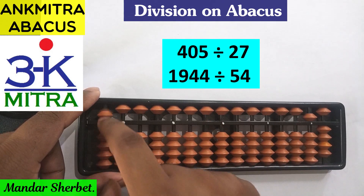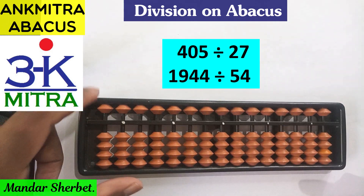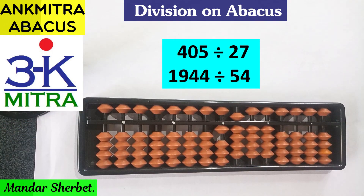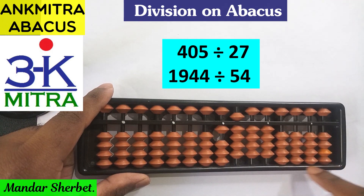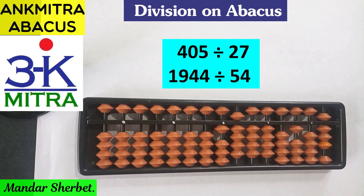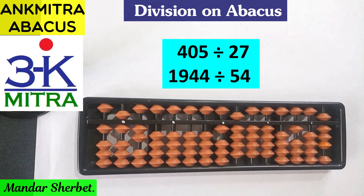Now let's consider the second sum. The dividend — the number to be divided — is a four-digit number: 1944. I'll place 1944 on the question set. The divisor is 54. Assuming we don't know the table of 54 by heart, we'll calculate multiples: 54 two times is 108, noted in the extreme right corner, and 54 three times is 162, noted in the extreme left corner.